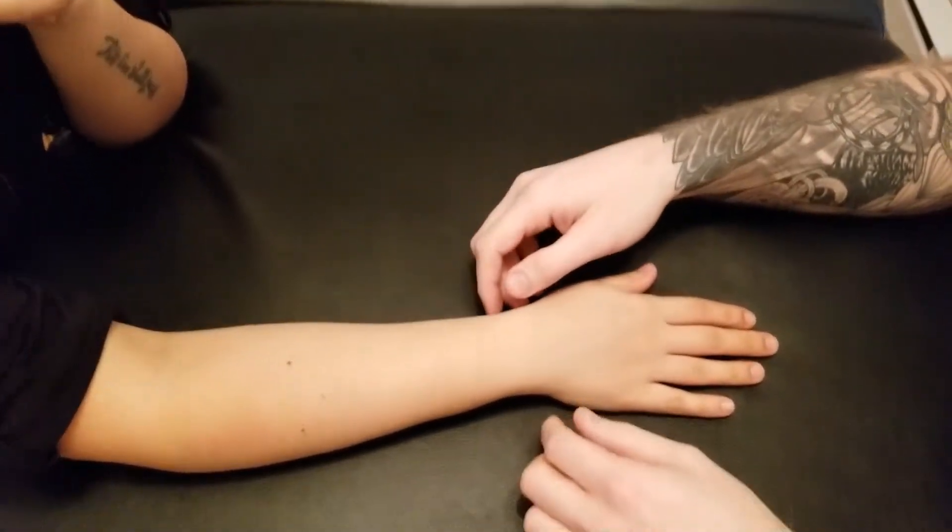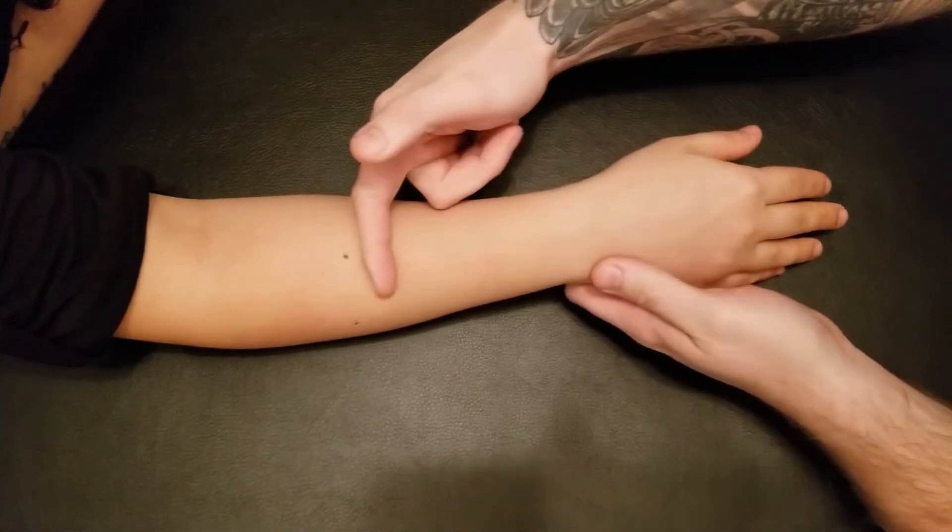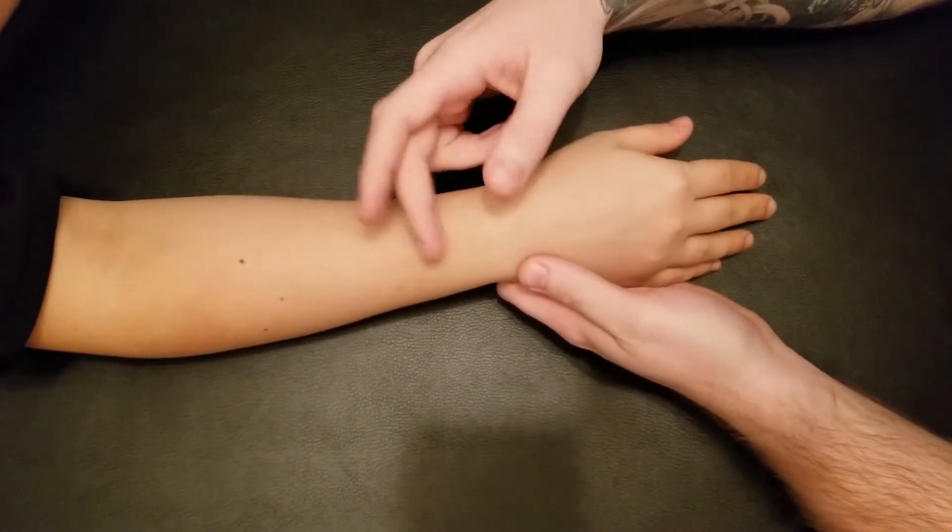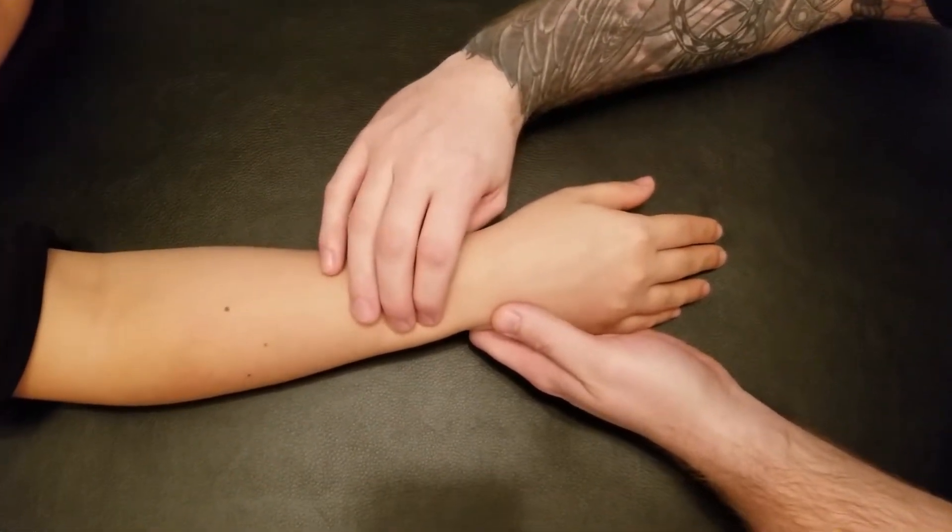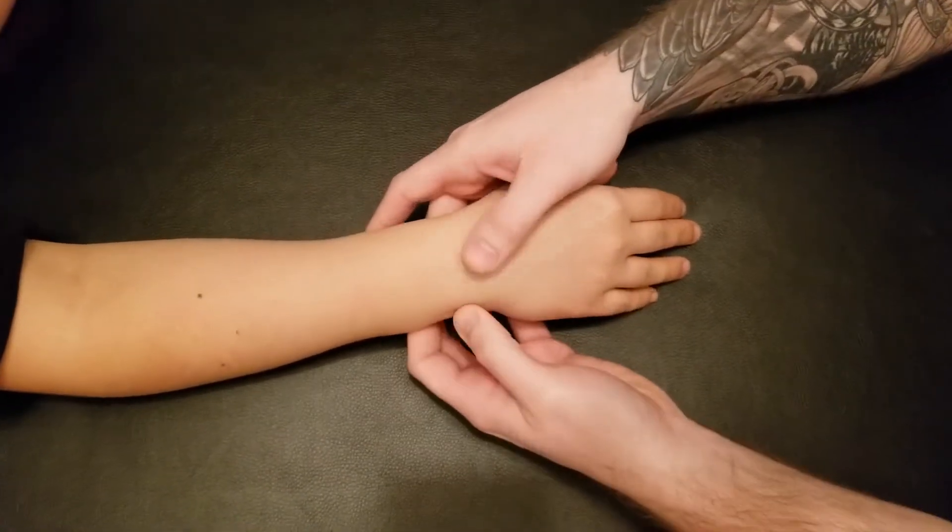We're going to be palpating extensor indicis. The extensor indicis is the lowest muscle on the posterior forearm, or distal muscle. Its origin is going to be on the distal posterior ulna as well as the interosseous membrane.